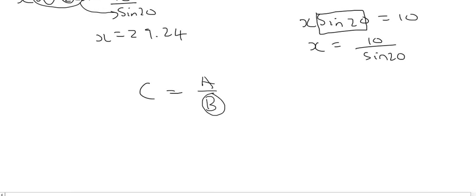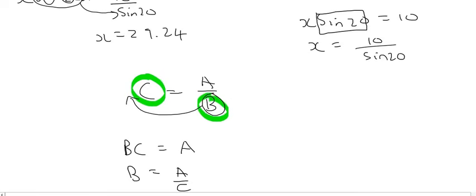And let's say we want to get b by itself. Then b is currently at the bottom and that's not a good thing. So what we do is we have to somehow get it to the top. So it becomes bc equals to a. And then to get the b alone, you would have to divide by c. So you would have b is equal to a over c.